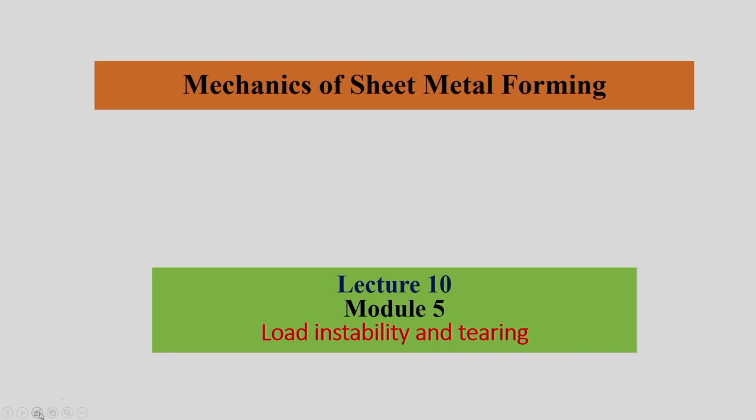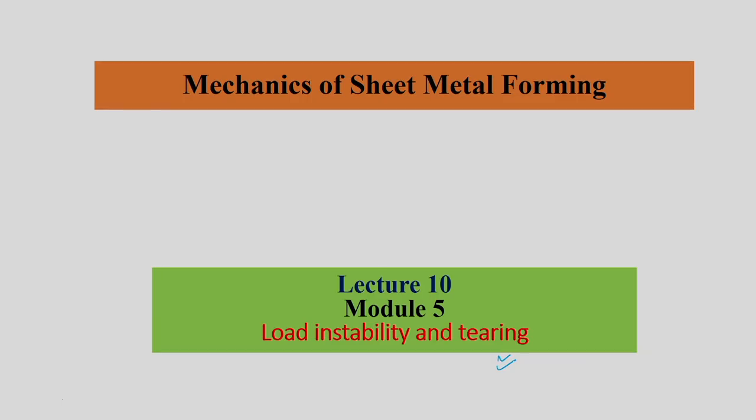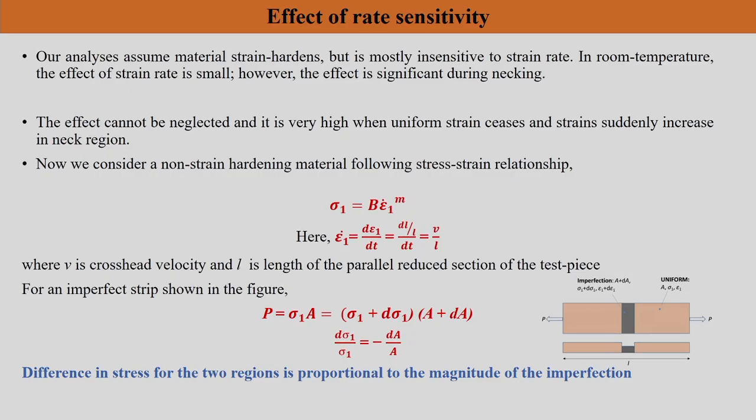We are going to continue our discussion on load instability and tearing. In the last session, we discussed the meaning of imperfection in the sheet, the use of that, and we derived an equation for n minus epsilon_u as a function of imperfection severity dA0 and n, the strain hardening exponent.